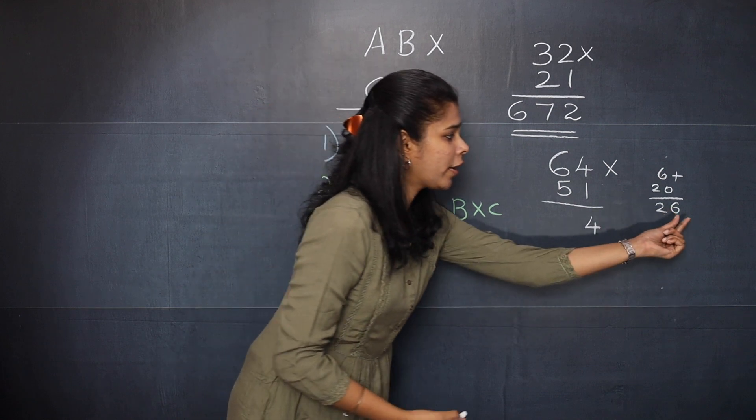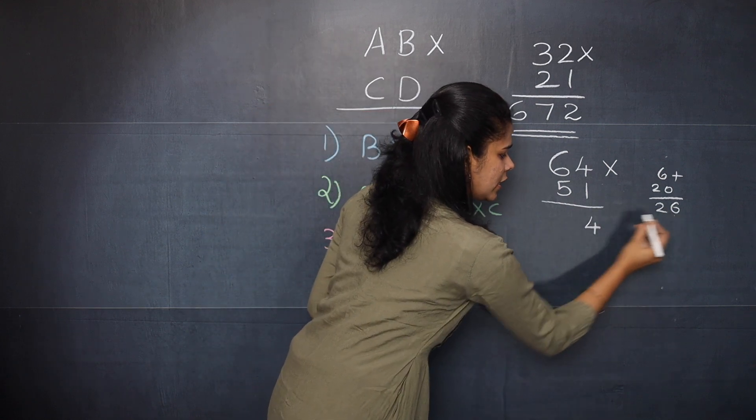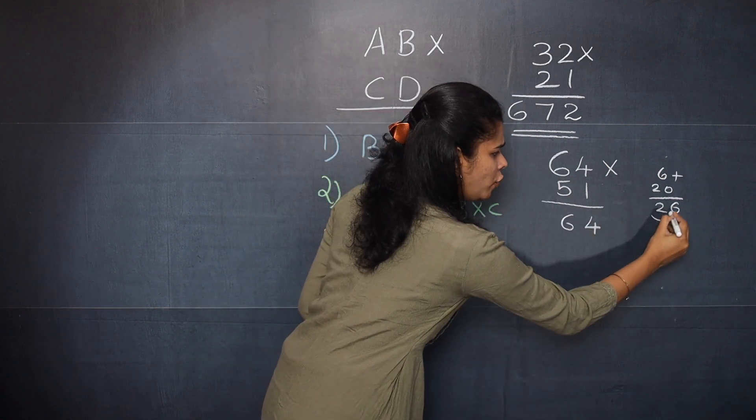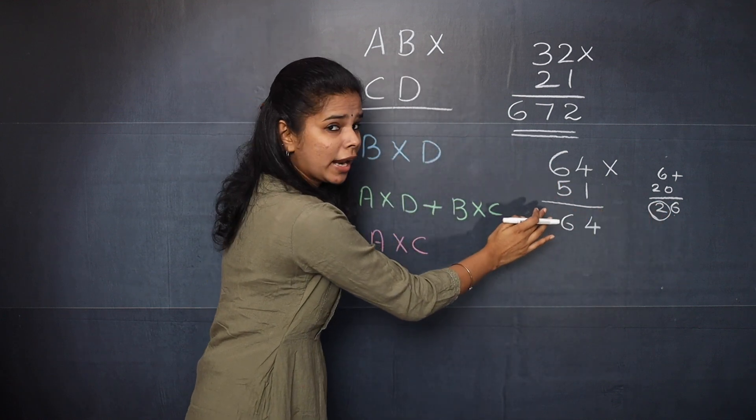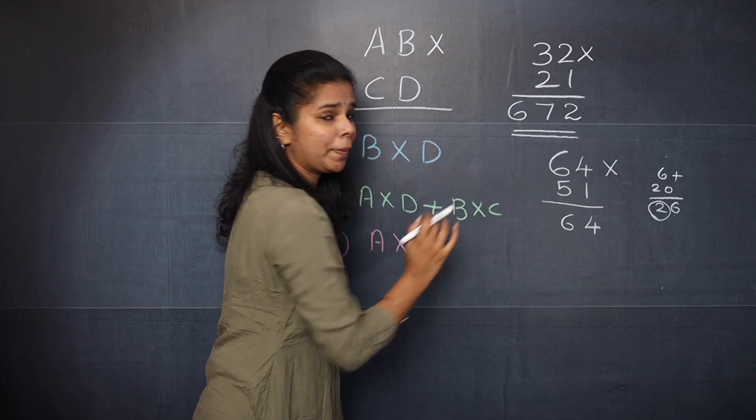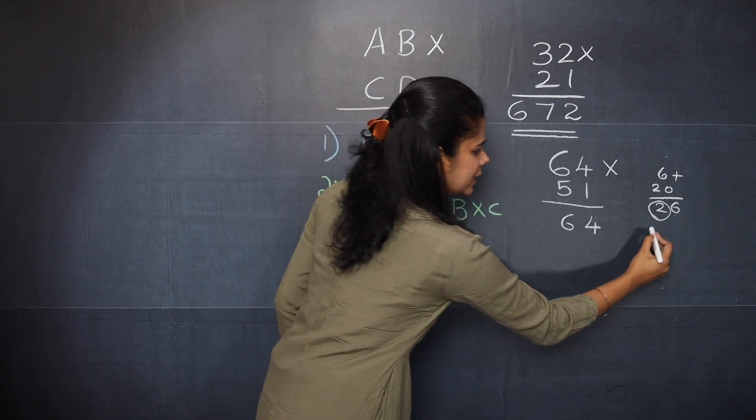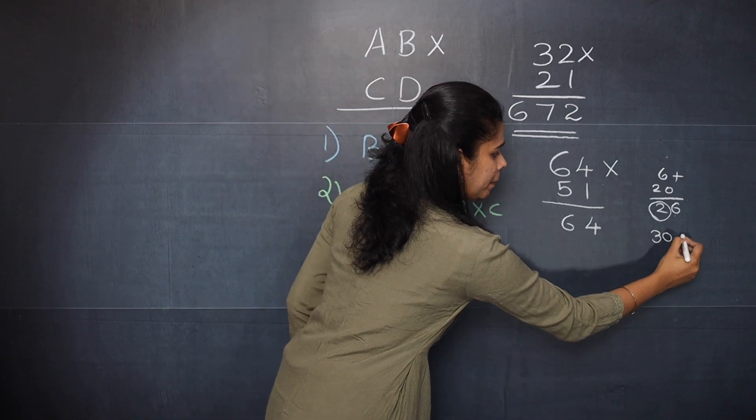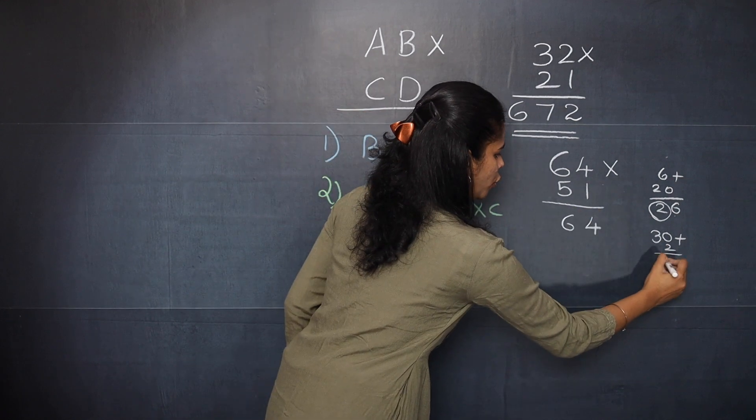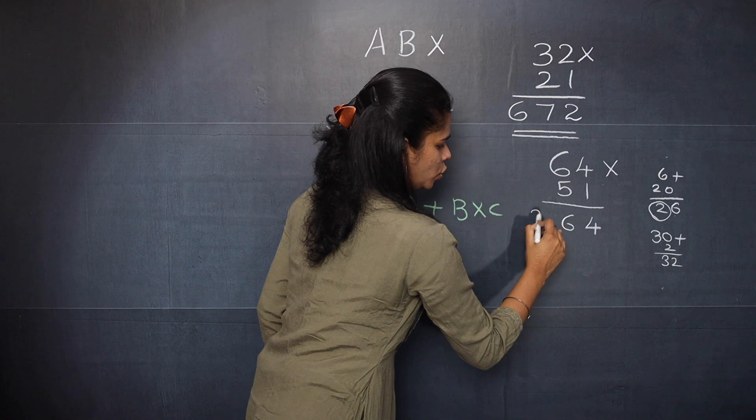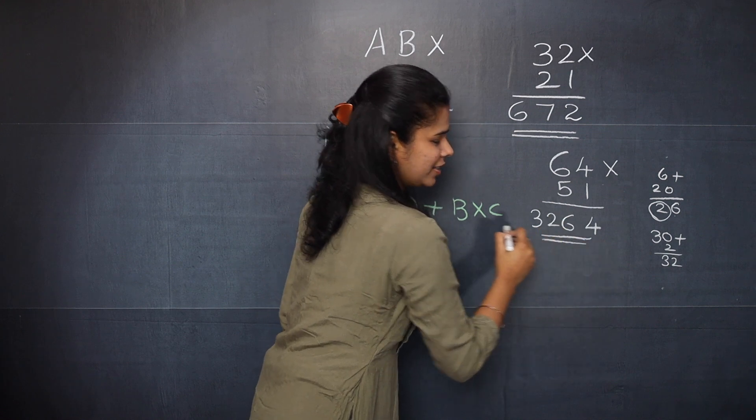So in this case you will write only 6 here. And this 2 will be your carry over. Now let us move on to the last step. That is 6 multiplied by 5. And that is 30. And plus you need to add the carry over. That is 2. You will get 32. So this is the answer.